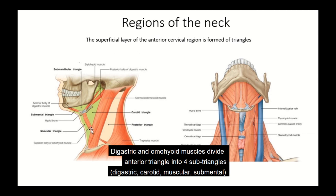The second muscle is the omohyoid, a long muscle originating from the scapula, traveling through the posterior triangle, entering the anterior triangle in front of the sternocleidomastoid, and attaching to the hyoid bone. With the help of these two muscles — digastric and omohyoid — we can divide the anterior triangle into four sub-triangles.